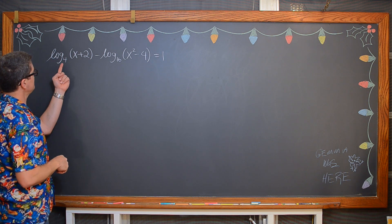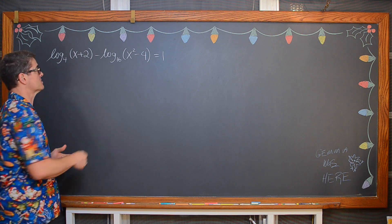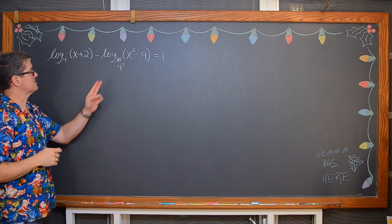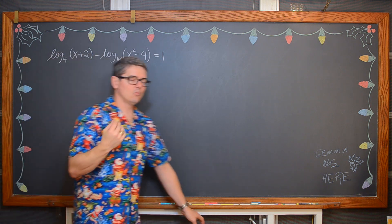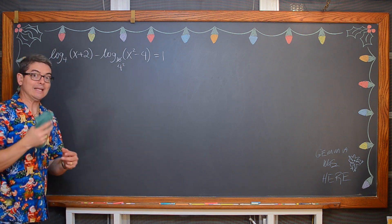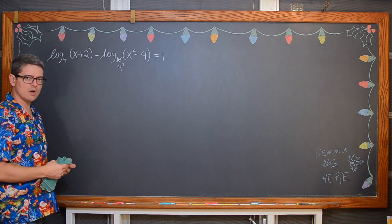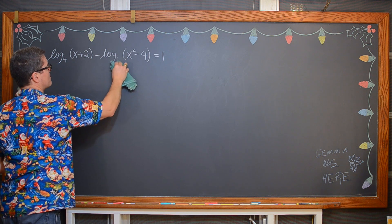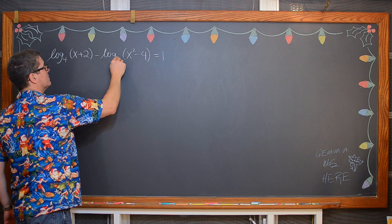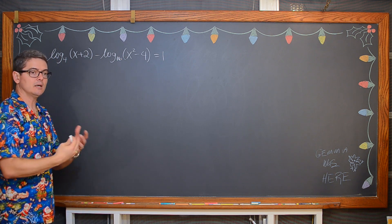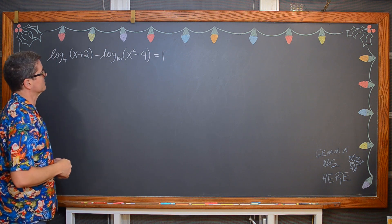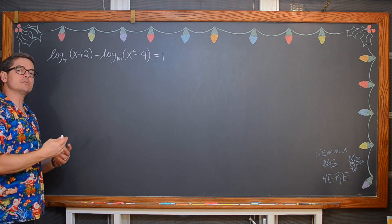We are going to have to rewrite these logarithms to have the same base, and then we will be able to condense those logarithms so we only have one log function, then rewrite that equation into exponential form and finish the problem. We see that we have a log base 4 and a log base 16. We could write 16 as 4 squared and see that our bases are almost the same, but then what do you do with that exponent of 2 that is on the 4 in the base of the logarithm? So what you want to do is use the change of base formula.